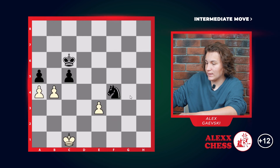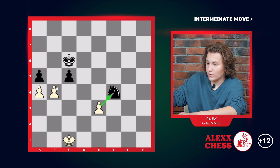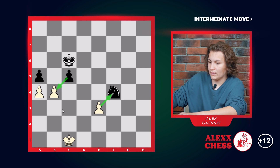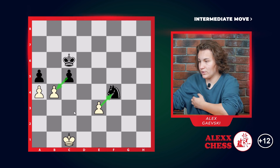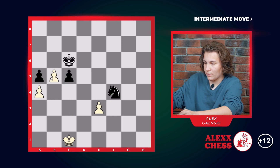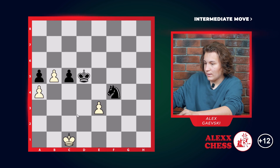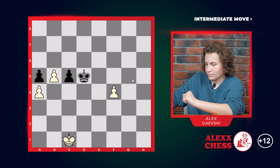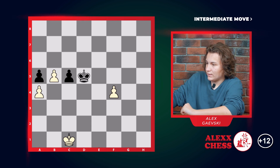Let's move on to the next example. In this example, if we take the knight now, the black pawn will eat our pawn on c4 and this will be a little problem. So what we do is check on b5, king goes d5, and only now do we take the knight.